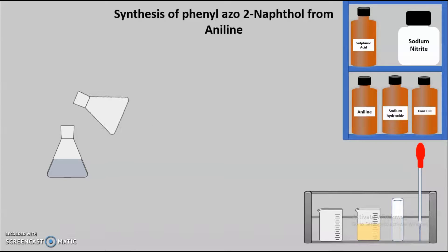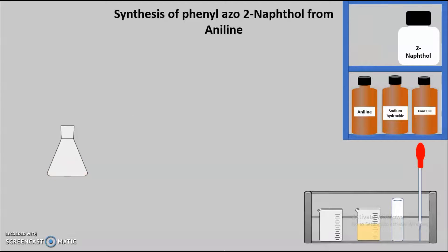Now we are going to mix the conical flask containing the sodium nitrite solution with the first solution containing aniline. We are going to mix this second solution into the first solution after cooling. Here you can see we are mixing this solution and reducing the temperature of this particular solution to 0 to 5 degrees Celsius. After this, we have to prepare the third solution — the solution of 2-naphthol in 10% sodium hydroxide solution.